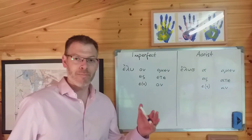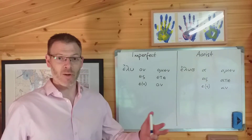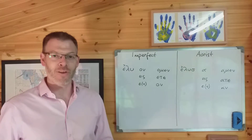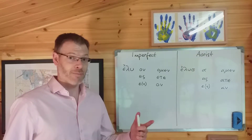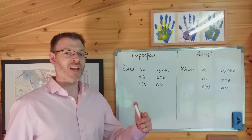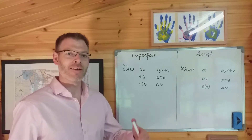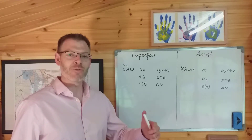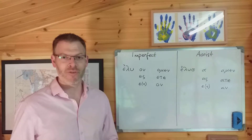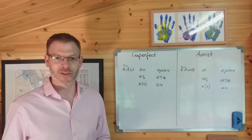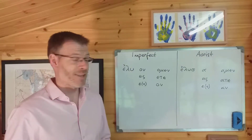So if you know the present, you know the future. Luo with the sigma suffix: luo, lueis, luei, luomen, luete, luousin. What could be easier? You're already a third of the way there, and you haven't even done any work yet.